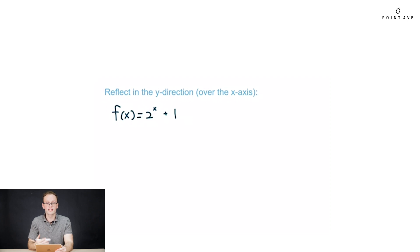Now to compare, we're going to reflect in the y direction, which is over the x axis. So again, because this is a reflection, we will multiply it by a negative. But because it is a y reflection, that negative is outside of the entire function. So applying to the example function here, we see our reflected function becomes f of x equals negative 2 to the x minus 1.